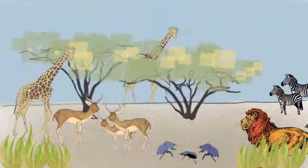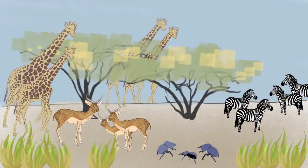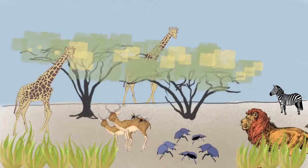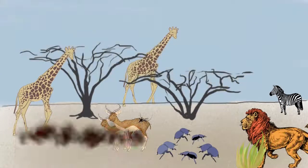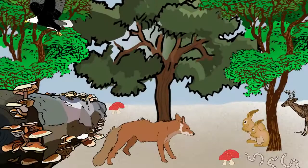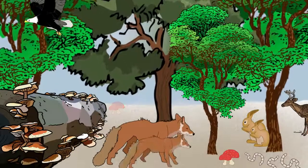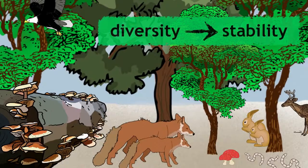Ecosystems are incredibly dynamic, as populations of organisms increase and decrease, and climatic conditions always alter. Some ecosystems can be very stable, in that they change very little over long periods of time. Generally, the more diverse an ecosystem is, the more stable it will be.